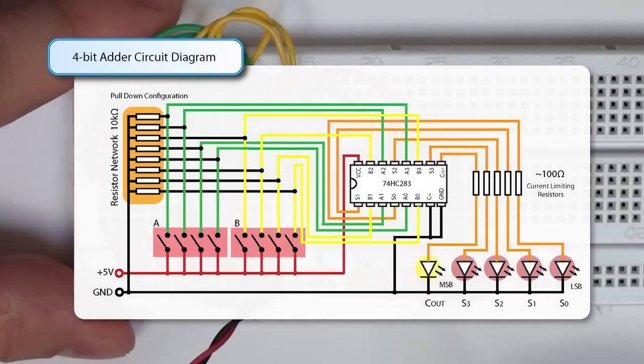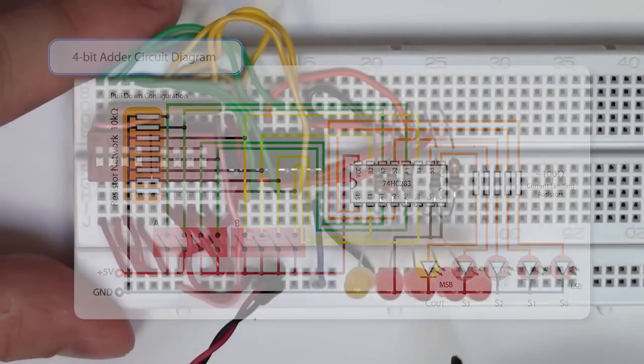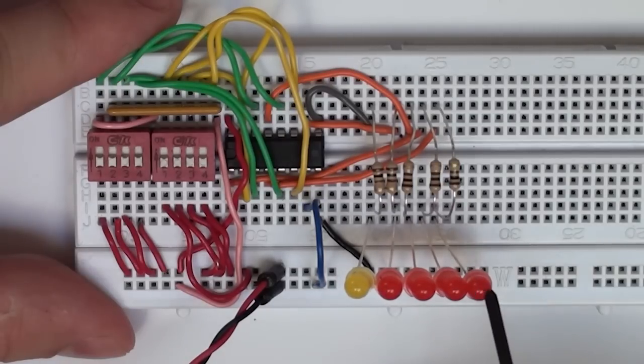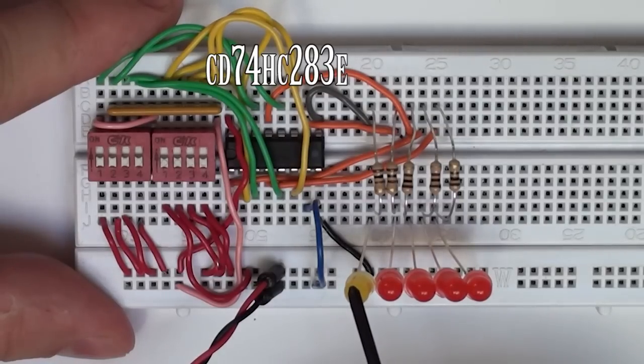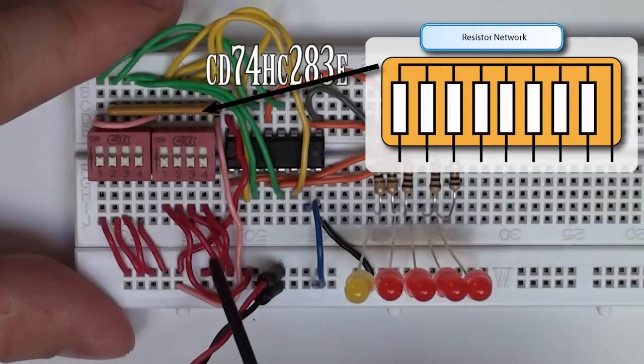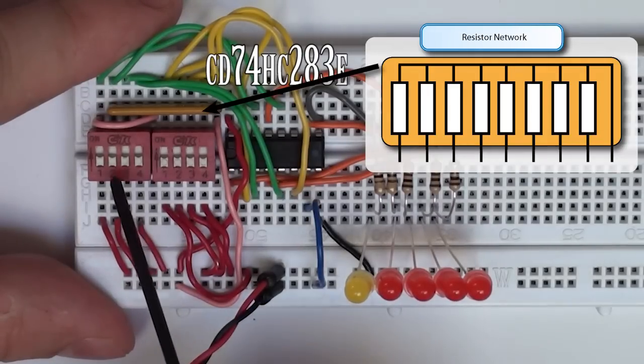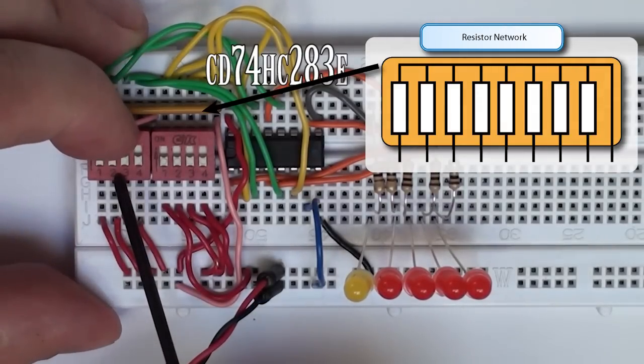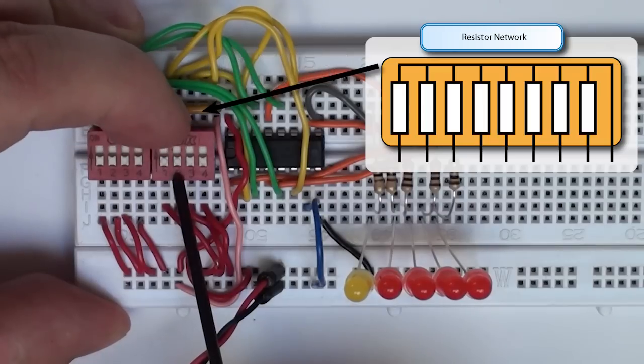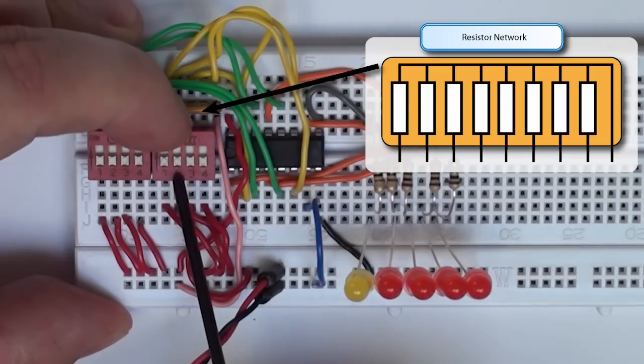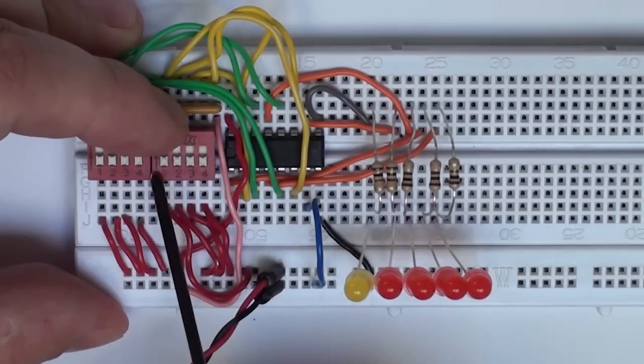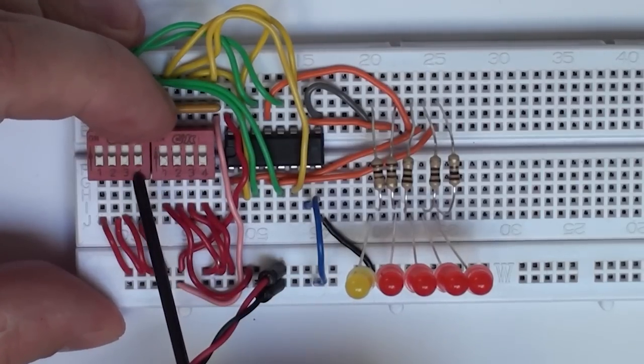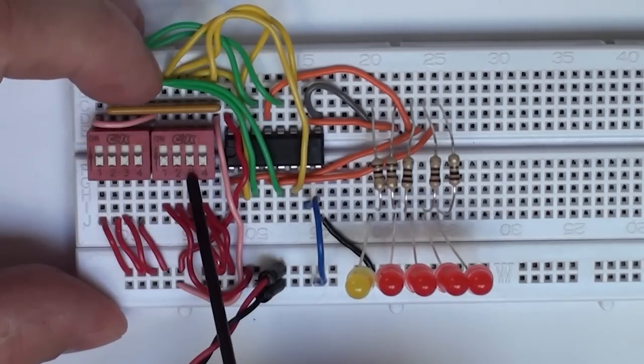This is my circuit that allows me to add two 4-bit numbers together. Here's my output. This is the lowest significant bit to the most significant bit. And the yellow LED here represents the carry bit going forward. So on the left hand side here I have my first 4-bit number, we'll call it A. And on this side here I have my second 4-bit number, we'll call it B. In this case, this is the least significant bit of the B number. This is the least significant bit of the A number. So it means we can add these numbers together.